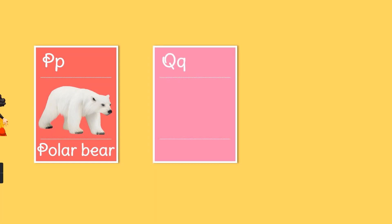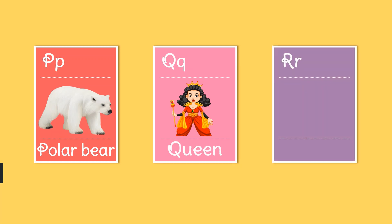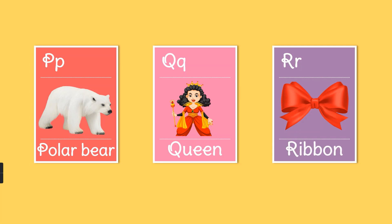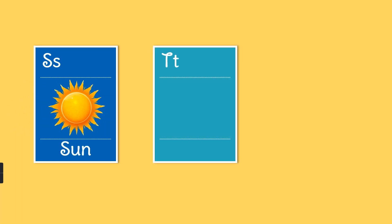P. P for polar bear. Q. Q for queen. R. R for ribbon. S. S for sun. T. T for tree.